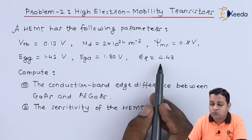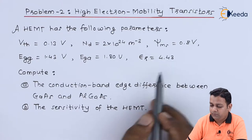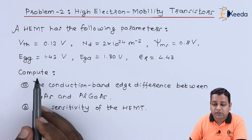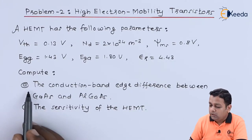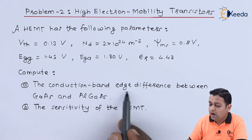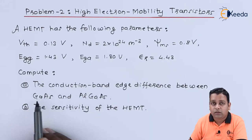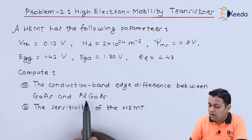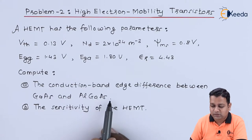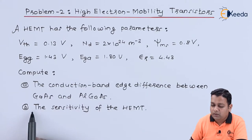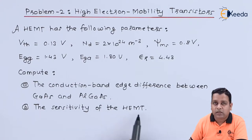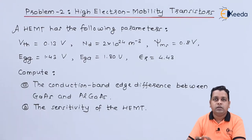E suffix R equals 4.43. We are asked to compute the conduction band edge difference between GaAs and AlGaAs. In part B, we need the sensitivity of the HEMT.